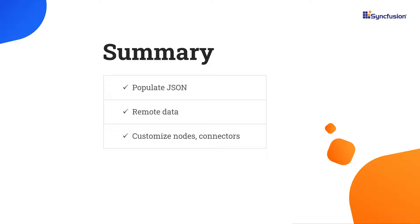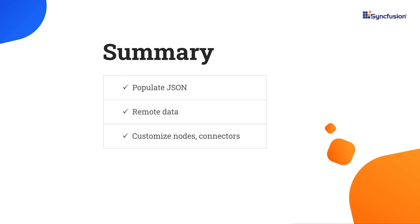In this video, we saw how to populate JSON and remote data sources in the Syncfusion Vue Diagram component to render an organization chart. We also saw how to customize the nodes and connectors. If you'd like to see the working example, you can download it from the GitHub link shared in the description below. I have also included a link where you can check if you qualify for our community license, giving you a free license key for our entire Vue suite if you are eligible. If you found this video useful, don't forget to click the like button and subscribe to our channel. Thanks for watching!